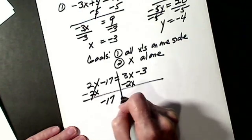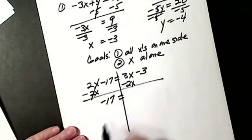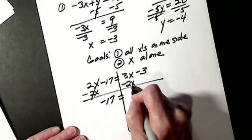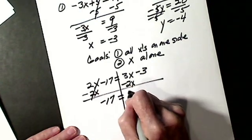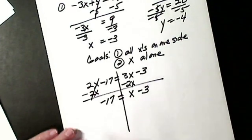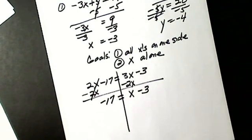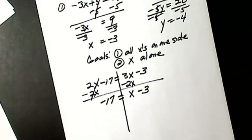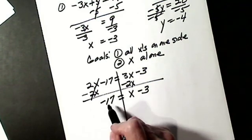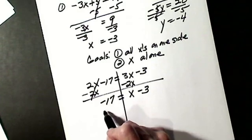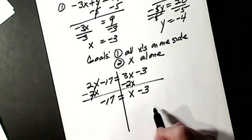I have negative 17 equals — subtract, take the sign of the larger — X minus 3. You forget what you're doing, you think of your goal. I want X alone. The people that mess up equations start going and adding 17.